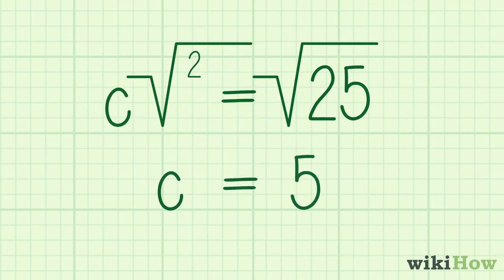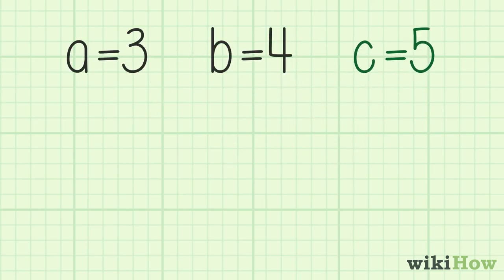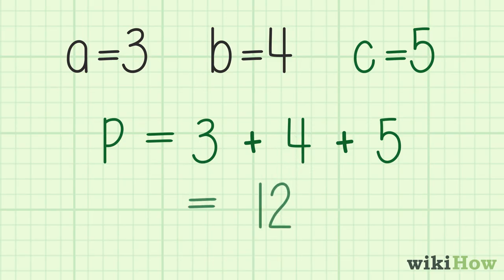Therefore, the length of the unknown side is 5. Finally, add all of the side lengths together to find the perimeter. In this case, you would add 3 plus 4 plus 5 and get 12.